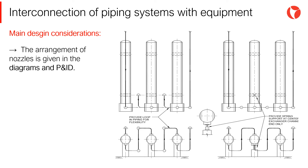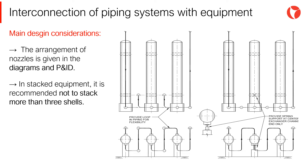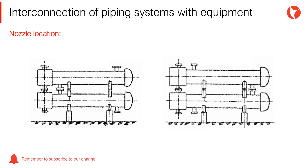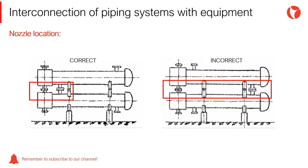The arrangement of the nozzles is given in the diagrams and P&ID. In stacked equipment, it is recommended not to stack more than three shells. The space in front of the exchanger should be free to allow for tube bundle extraction. In the case of stacked and interconnected exchangers operating in series or parallel, nozzles to be connected will be located as close as possible to avoid excessive stress or expansion differences between shells.